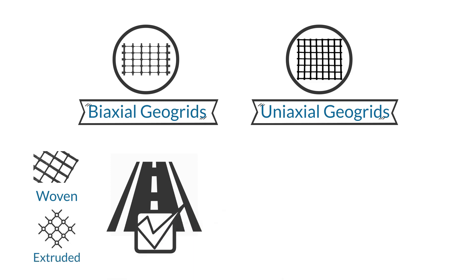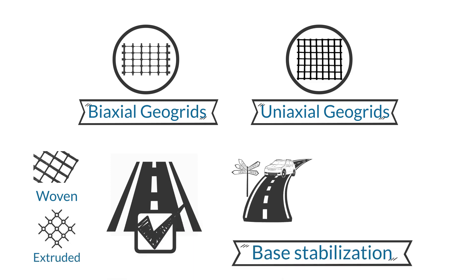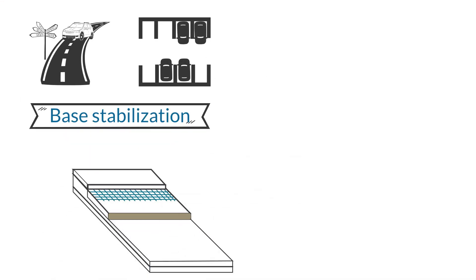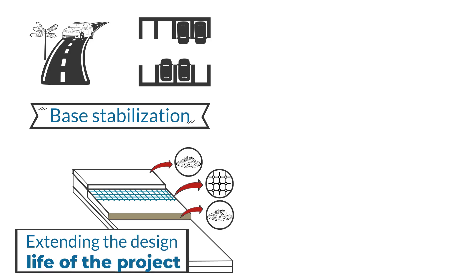Biaxial geogrids are mostly used for base stabilization in roadway and parking lot construction. When the geogrid is placed in the gravel base, it interlocks with gravel above and below, spreading the load and allowing less gravel to be used or extending the design life of the project.